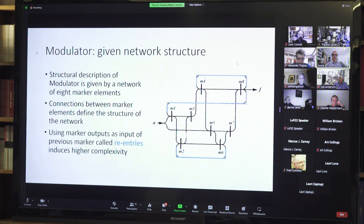What is the modulator? The modulator is a given network structure. The structural description is given by this network of eight different marker elements, which we name from M1 to M8. The connections between the marker elements define the structure of the network. The special case of such connections would be using marker outputs as inputs of previous marker elements, and those connections are called re-entries. They induce higher complexity and automaton behavior. You see the three re-entries in the modulator displayed in blue.